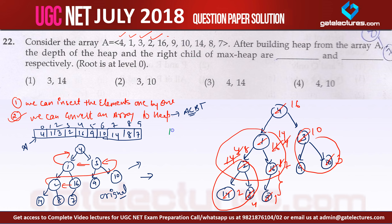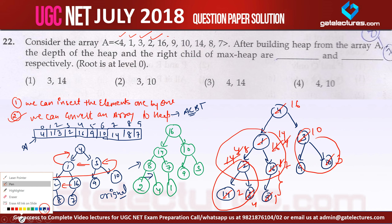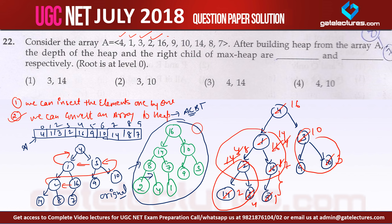After converting the entire tree to a max heap, the final result is: root is 16, left child is 14, right child is 10. Under 14: left is 8, right is 7. Under 9 and 3 in the next level. Under 8: left is 2, right is 4. Left of 7 is 1. Every subtree root contains the maximum element, confirming this is a valid max heap.